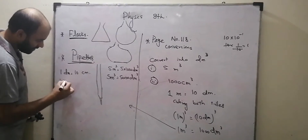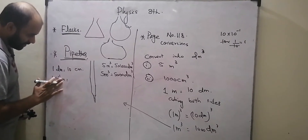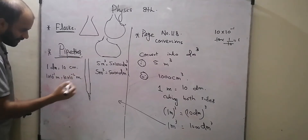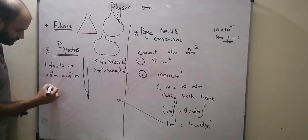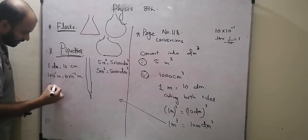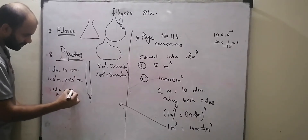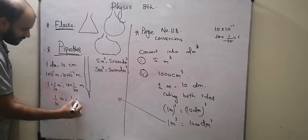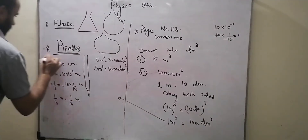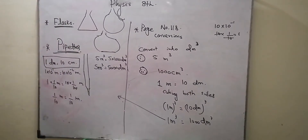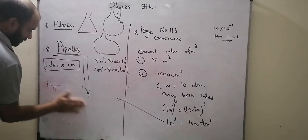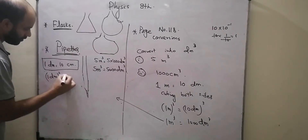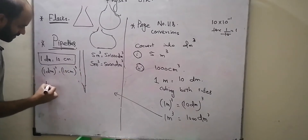Now converting 1000 decimetre cubed: 1 decimetre equals 10 centimetres, so 1 decimetre cubed equals 1000 centimetre cubed. Therefore 1000 decimetre cubed equals 1,000,000 centimetre cubed.